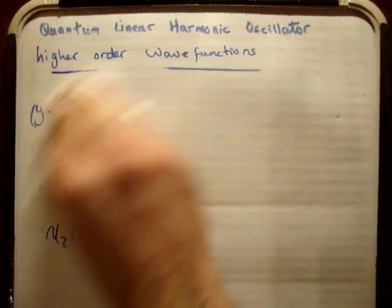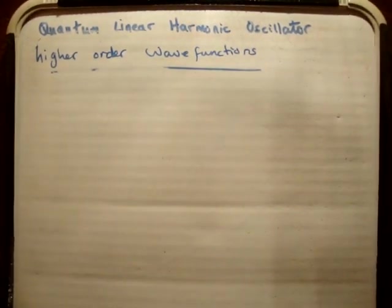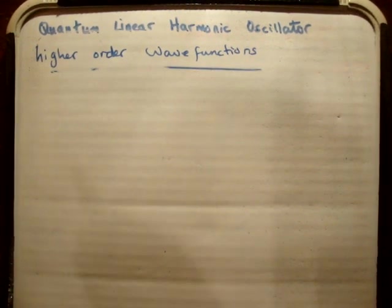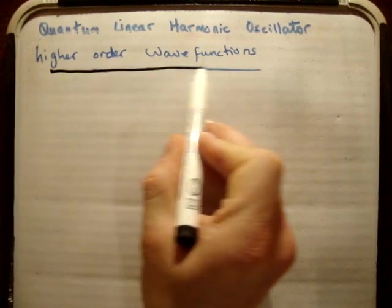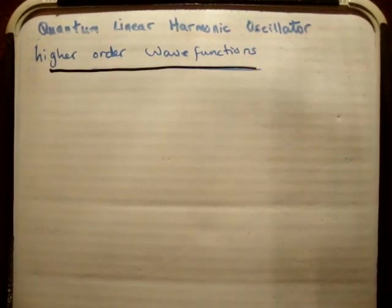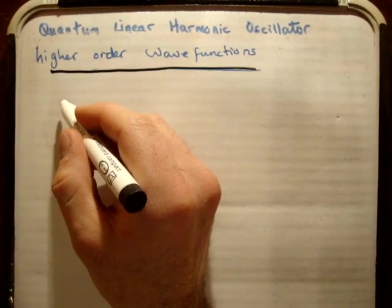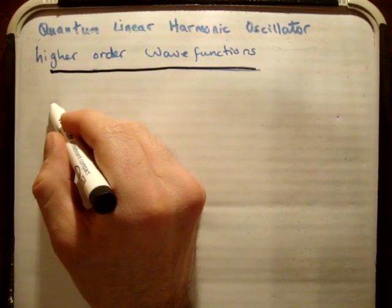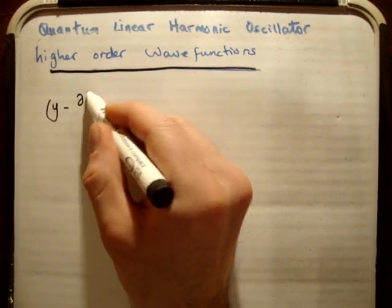So the next thing we need to do is we need to calculate the energy of this wave function. And I said to you last time that I didn't really know which form of the Schrödinger equation we should use. So in the previous one we used the y plus first, but in this case we're going to use this form of the Schrödinger equation.